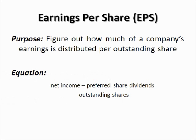Before using any type of analysis tools, you have to know what you are looking for and what you will be using it for. The first thing we will look at today is the earnings per share. The purpose of this particular ratio is to figure out how much of a company's earnings is distributed per outstanding share — put another way, if you own 10 shares, how much of the company's earnings do you own?